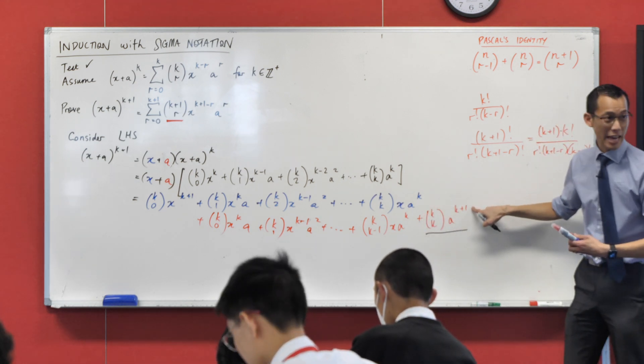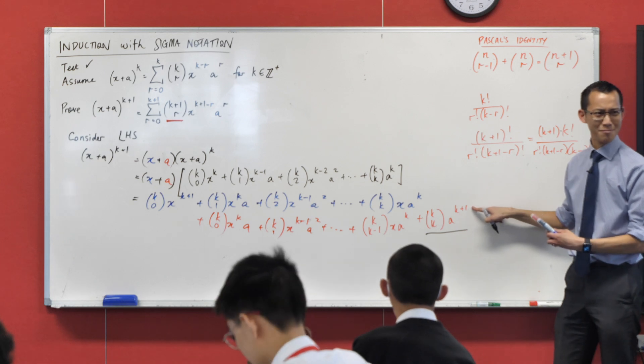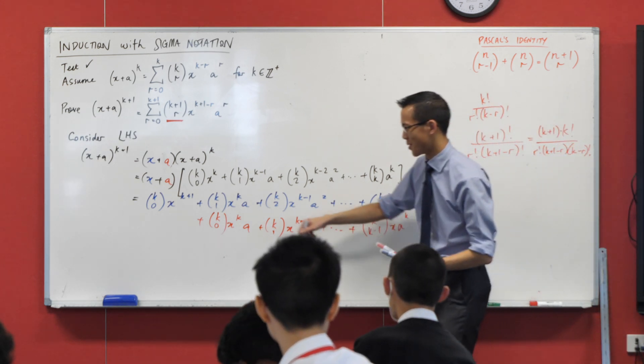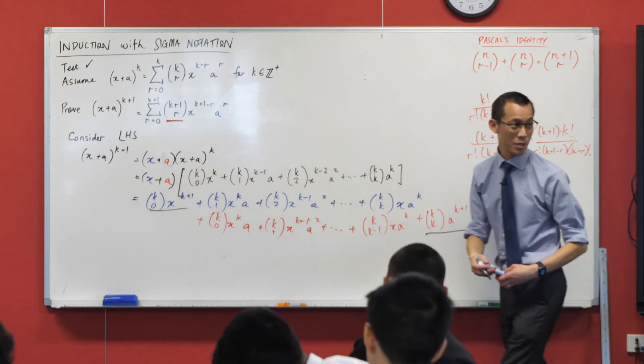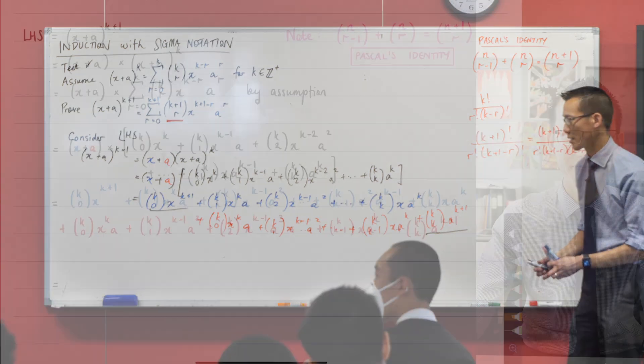And you can see this kind of nice symmetry here. You've got this one with a k plus one. Oh, a k plus one. It's almost like I wanted a k plus one. You've also got this one with a k plus one. So things are starting to look like what I wanted.